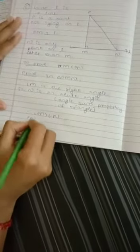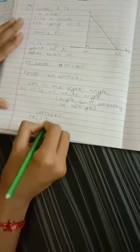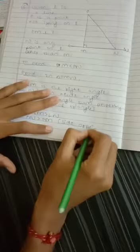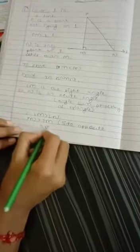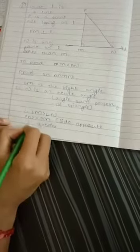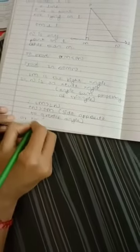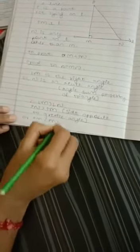Therefore, PN will be greater than PM. Reason: side opposite to greater angle. Or, we can say PM is smaller than PN.